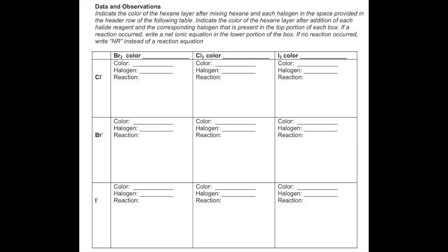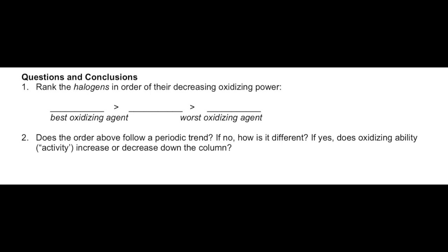Now you are to fill out the data form, listing the color of the halogen observed in the upper hexane layer both before the reaction and after mixing the anion with it. If a reaction occurred, write the reaction in the box. Then rank the halogen elements in order from best to worst oxidizing agent. At this point you should stop the video and plan how to identify an unknown containing an alkali metal cation and a halide anion — you should be able to do this in three test tubes, specifically two tests for the cation and one for the anion. A flowchart will aid in making this plan.